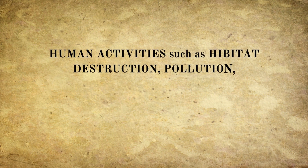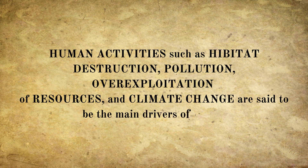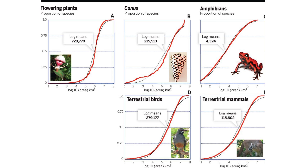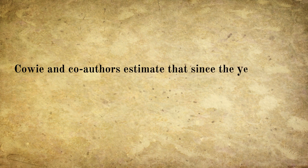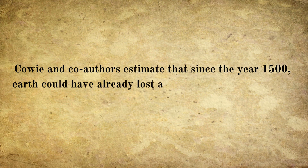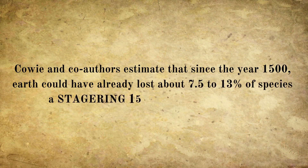Human activities such as habitat destruction, pollution, over-exploitation of resources, and climate change are said to be the main drivers. Robert Cowie, a research professor at the UH Manoa Pacific Biosciences Research Centre, believes there is a drastic increase in the rate of species extinction and declining abundance of many animal and plant populations. Yet some deny that these phenomena amount to mass extinction, a denial based on a view that focuses on mammals and birds while ignoring invertebrates, which constitute the great majority of biodiversity. By extrapolating from estimates for land snails and slugs, Cowie and co-authors estimated that since the year 1500, Earth could already have lost between 7.5% and 13% of 2 million known species — a staggering 150,000 to 260,000 species.